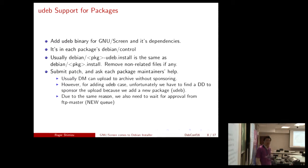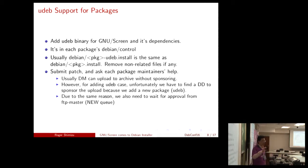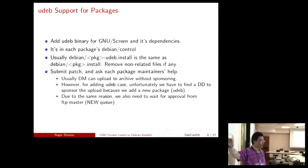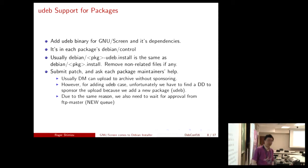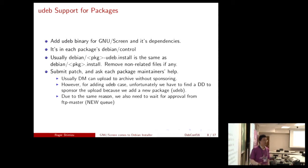For UDEB support, normally it's controlled by debian/control, which lists every binary package for the source package. We just add an additional section to add the UDEB as a new binary. After that, we create a new UDEB install file — it's almost identical to the original install file, just removing some unnecessary files. After that, we create a patch and submit it to the package maintainer to let them incorporate the changes.